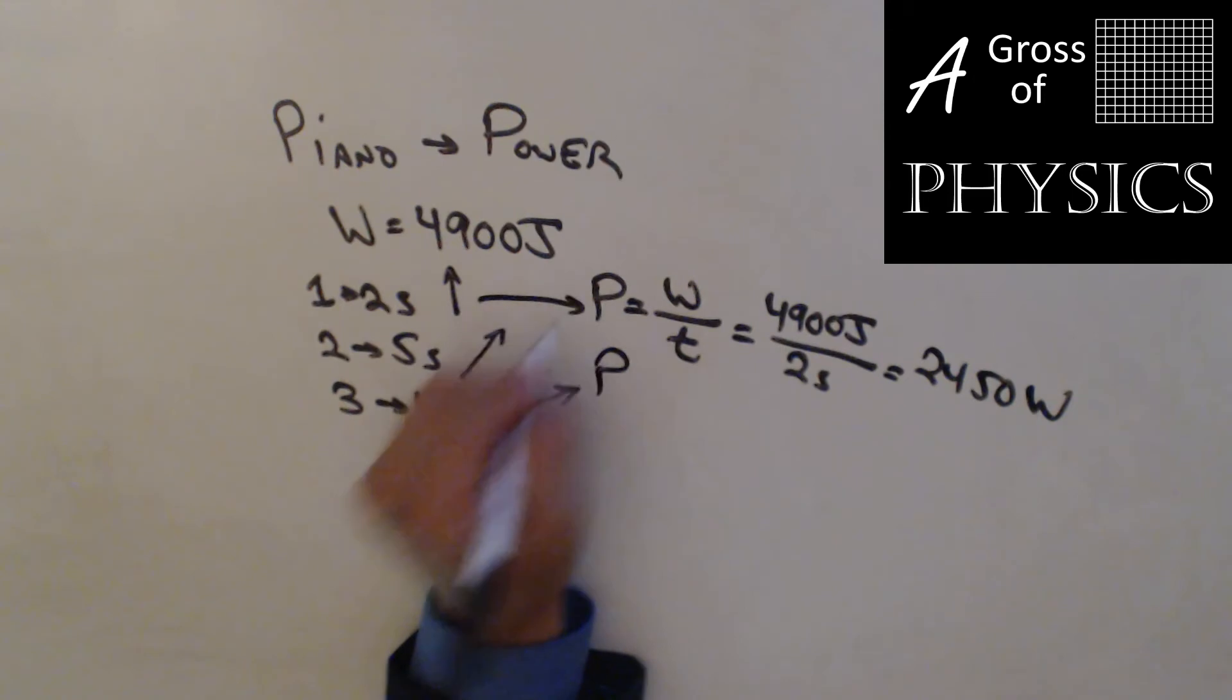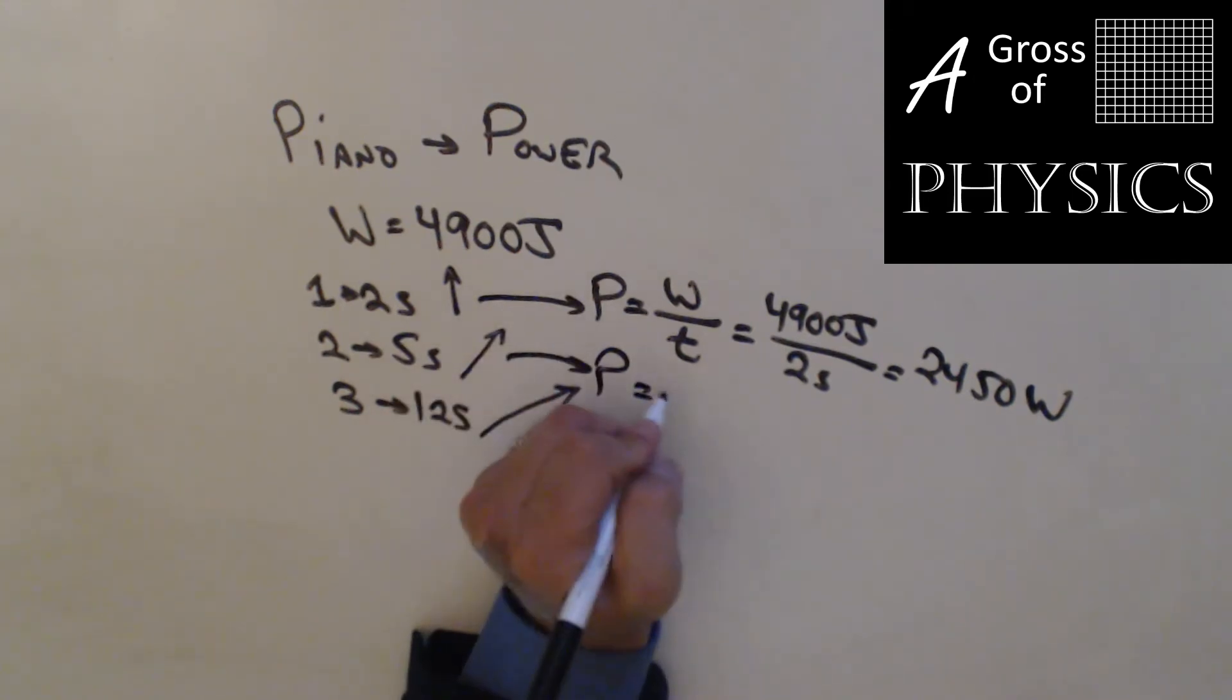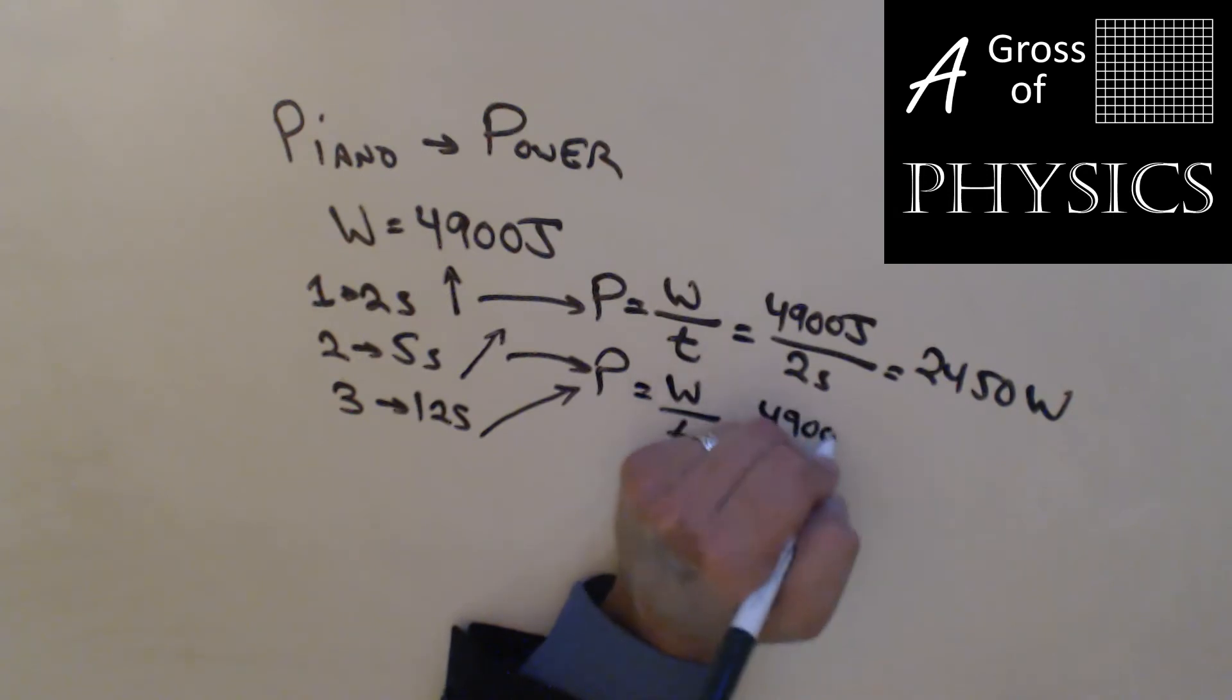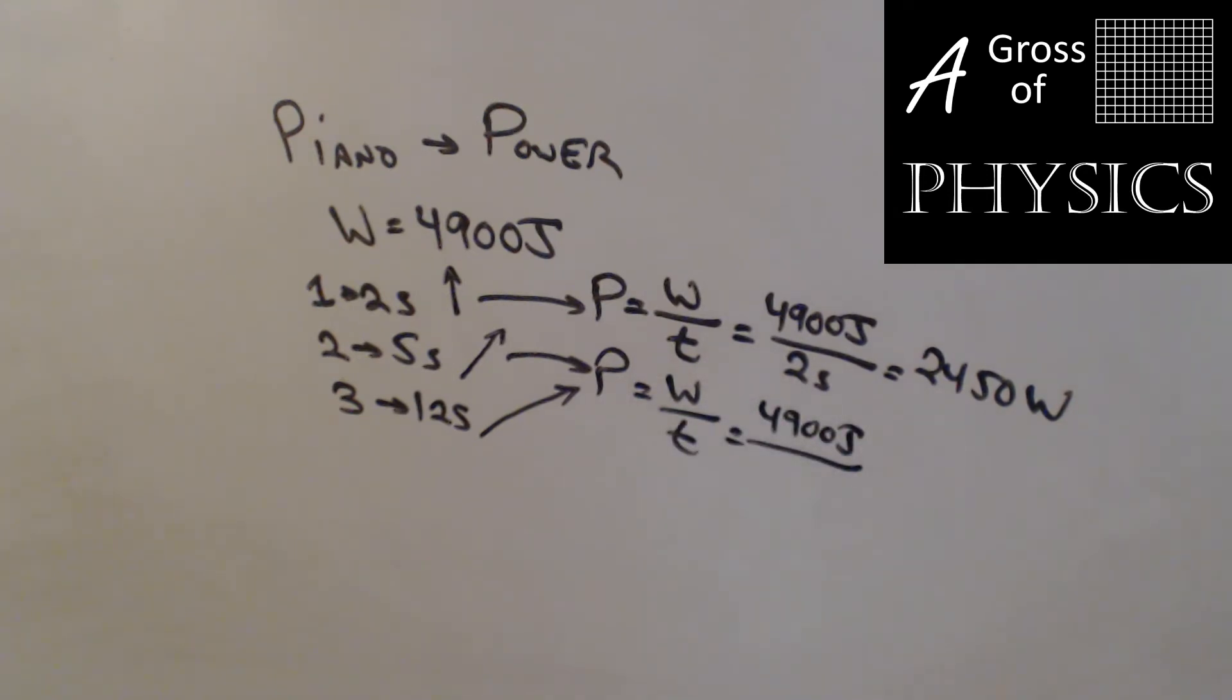Power for the second one, work over time, 4900 joules divided by five seconds, which gets me 980 watts.